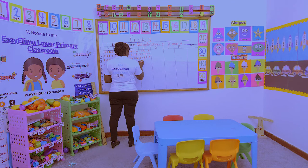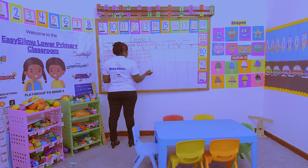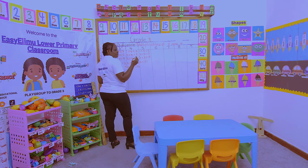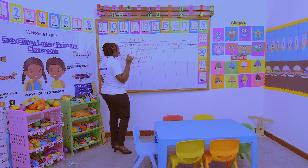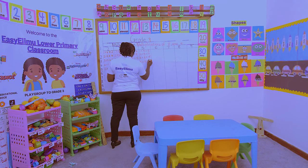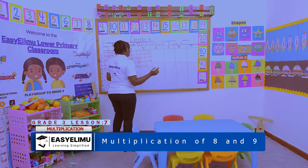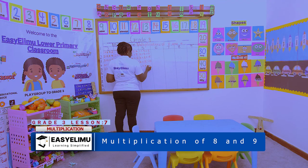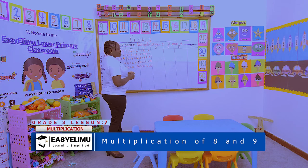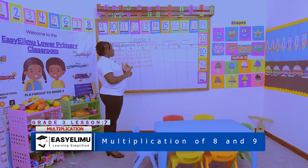4 × 5 is 15 + 5 = 20. 5 × 5 is 20 + 5 = 25. Alternatively, you can use your fingers to count in fives.